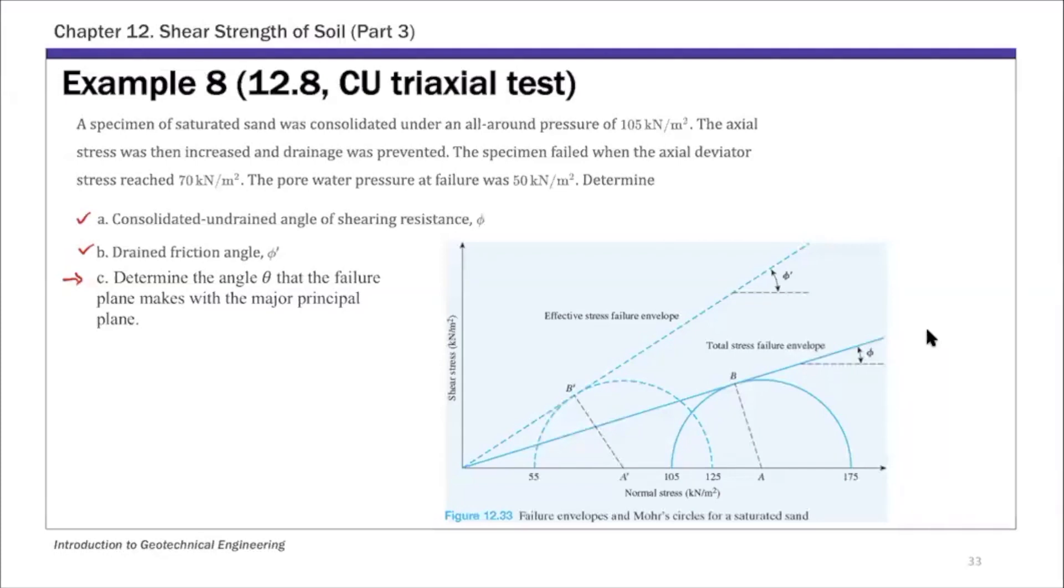To determine these, first let's look at these two strength parameters, phi and phi prime. To determine these two parameters, you first need to find out what are the principal stresses in this triaxial test at failure. This is saturated sand, so c and c prime are zero.